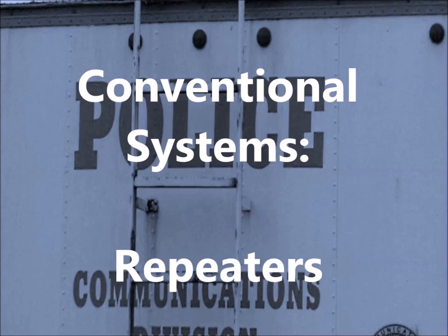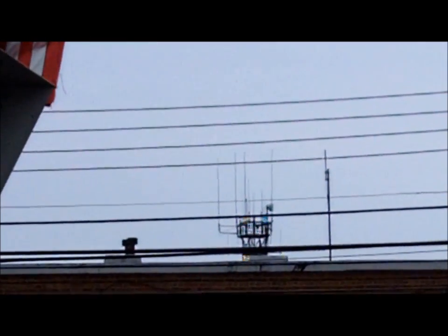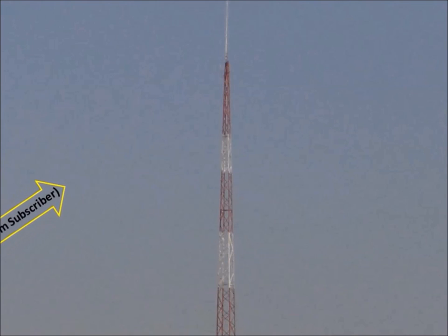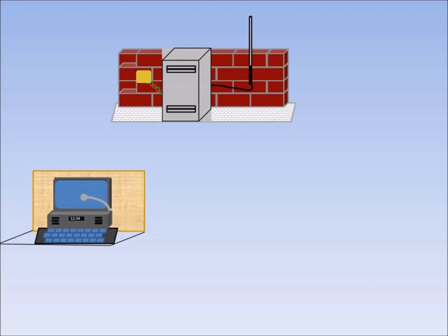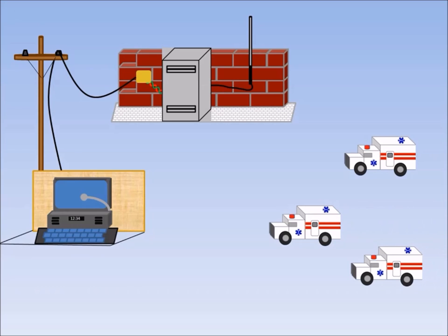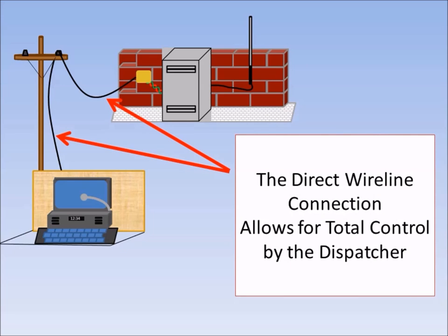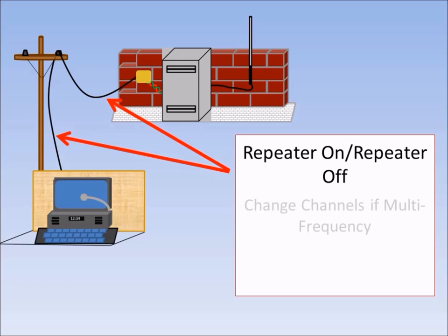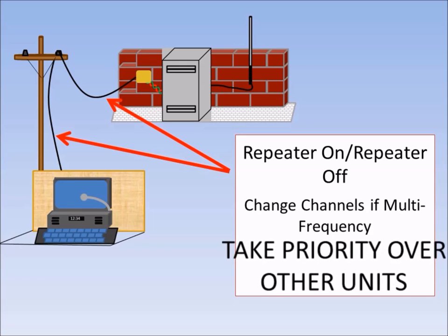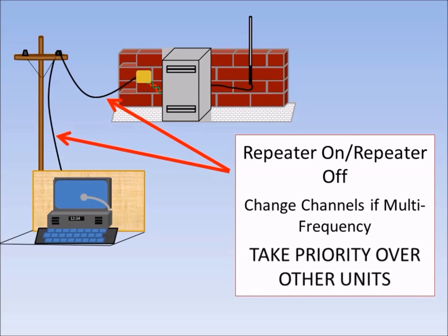We will now discuss conventional systems repeaters. A repeater station will receive on one frequency and retransmit the audio signal out on another. Using a repeater, you could still have a direct connection to the base station by the dispatcher, allowing a subscriber to be received by the dispatcher. The repeated signal would also be relayed to the other subscribers within the range of that repeater. Depending on the configuration, a dispatcher may be able to enable or disable the repeat function, change channels, or take priority over the channel if a subscriber was stuck in transmit.